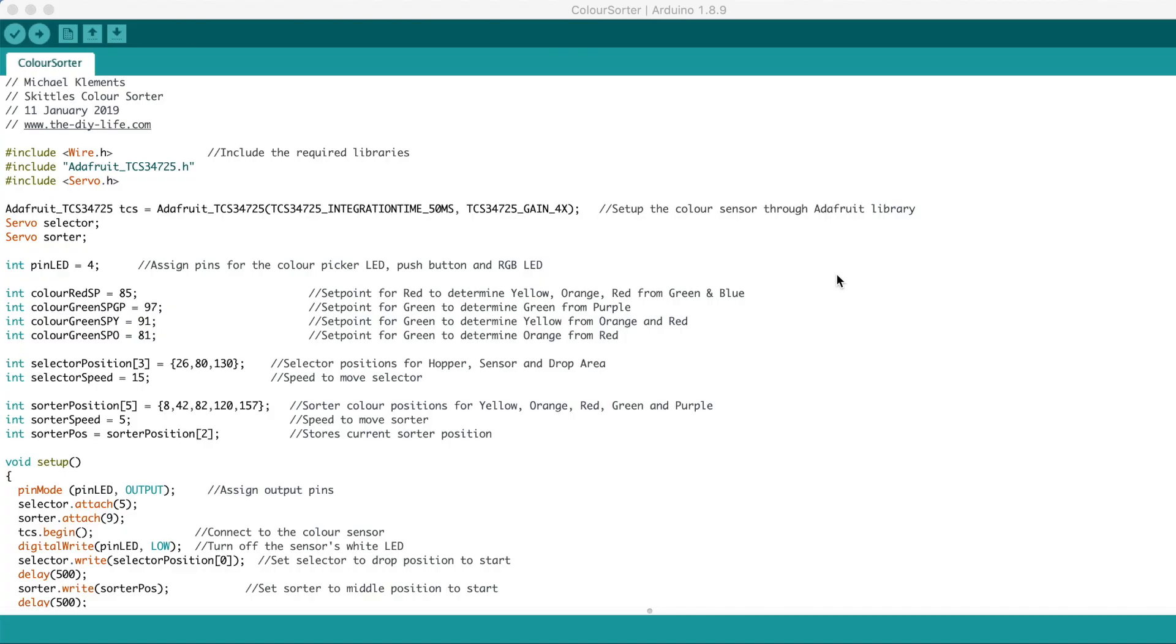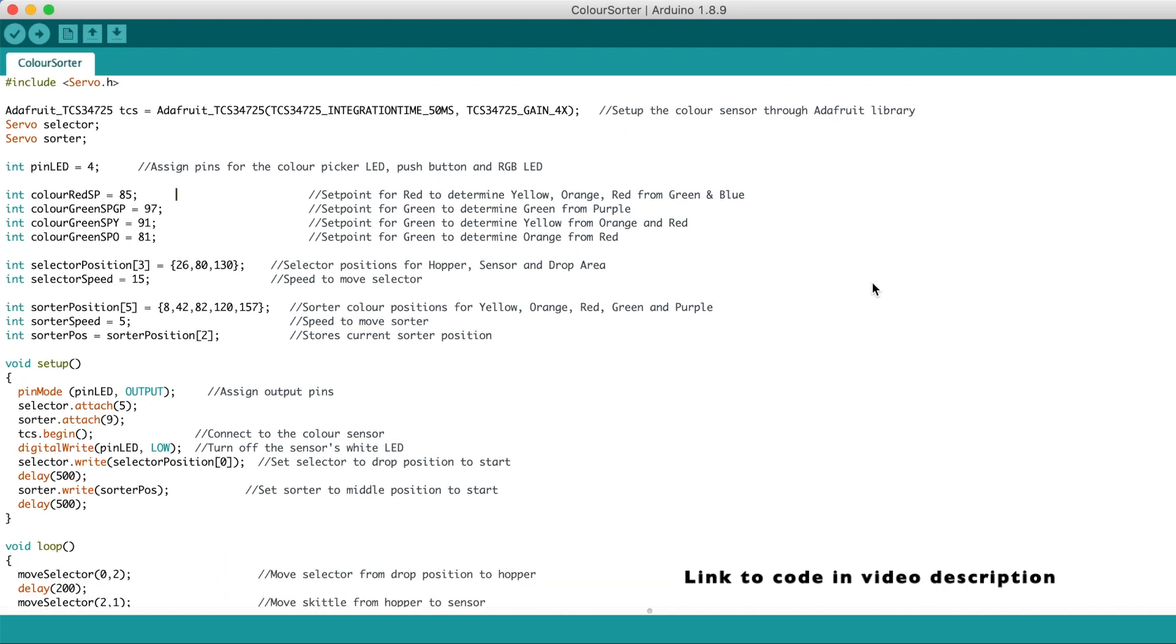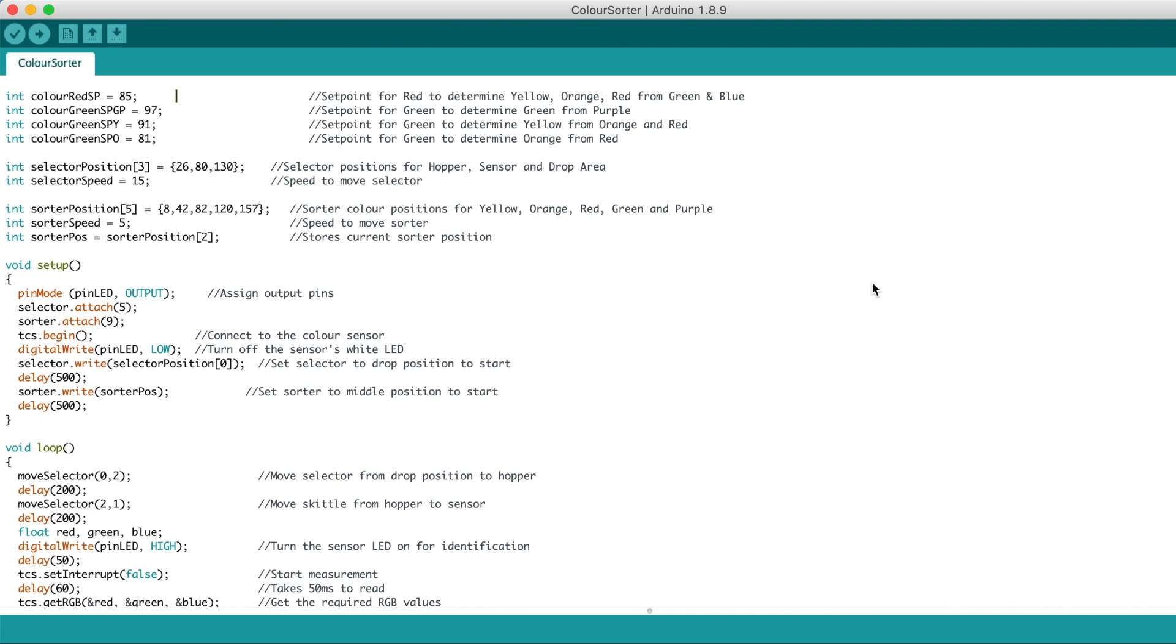Now let's load the code onto the Arduino. In the code we first set up all of the parameters for the colour measurement set points and the servo speeds and then initialize the servos and colour sensor.